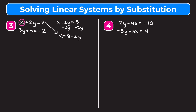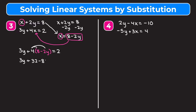Now x equals 8 minus 2y, so we substitute that expression into the second equation: 3y plus 4 times (8 minus 2y) equals 2. Distributing the 4 gives 4 times 8 equals 32 and 4 times negative 2y equals negative 8y. Combining 3y and negative 8y gives negative 5y, so negative 5y plus 32 equals 2.